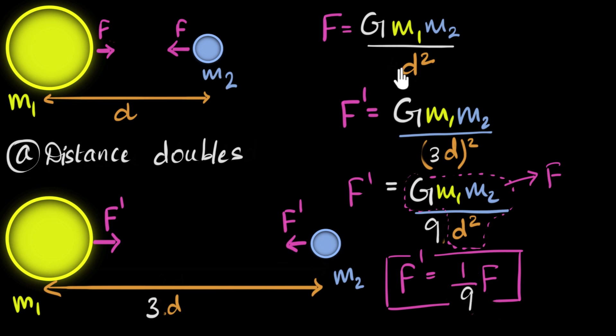And again, we can do this directly. We can just say there's a three, there's a square of three will become nine in the denominator, and so it becomes one ninth of the initial force.